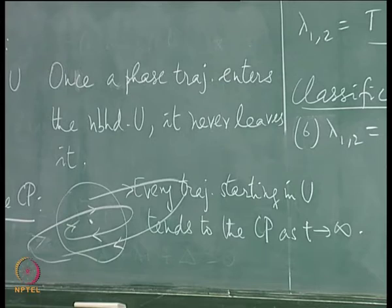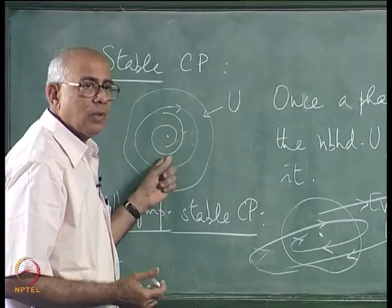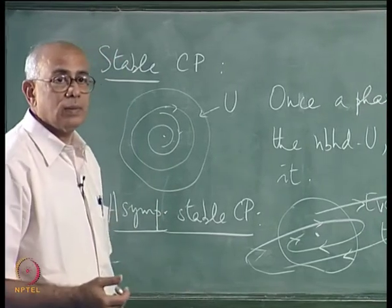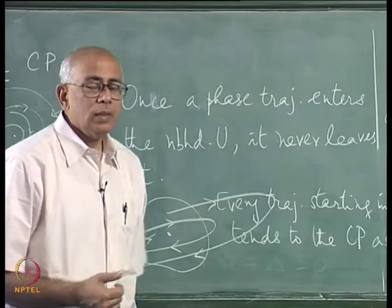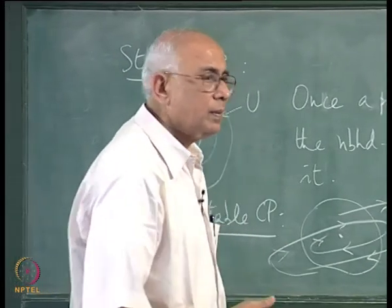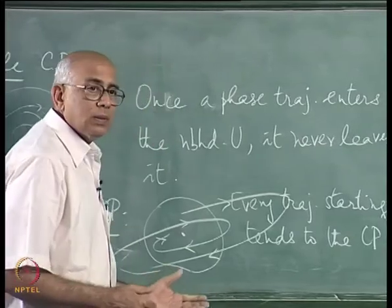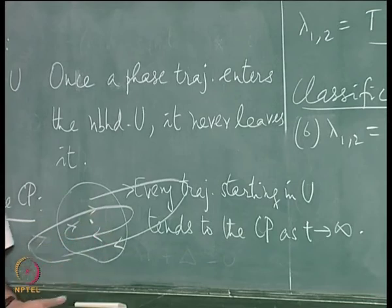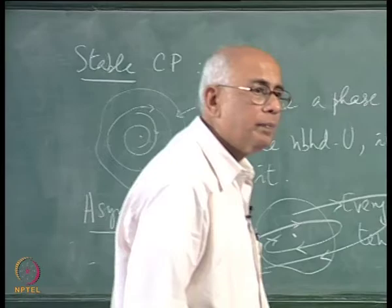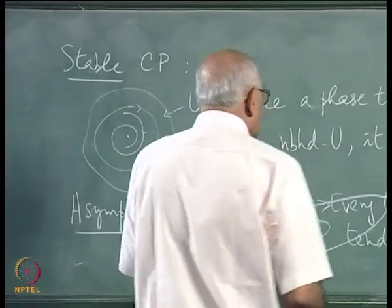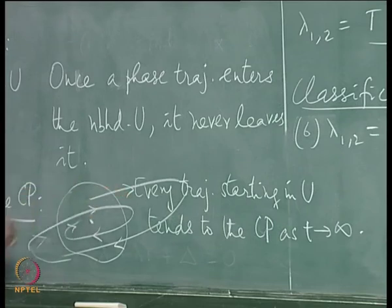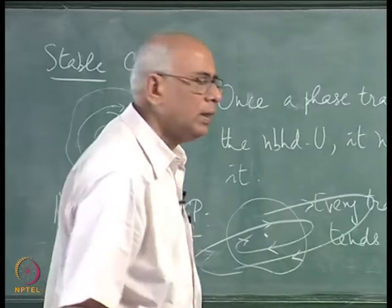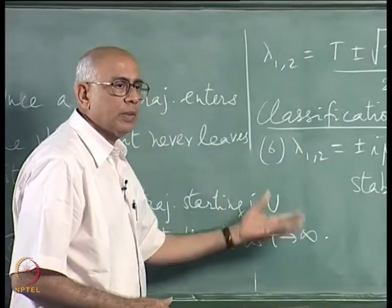You could have a critical point that is both stable and asymptotically stable, but it is not necessary. Centers in particular are stable but not asymptotically stable. Asymptotically stable spiral points need not be stable — they could spiral far away before coming in — but they are definitely asymptotically stable.